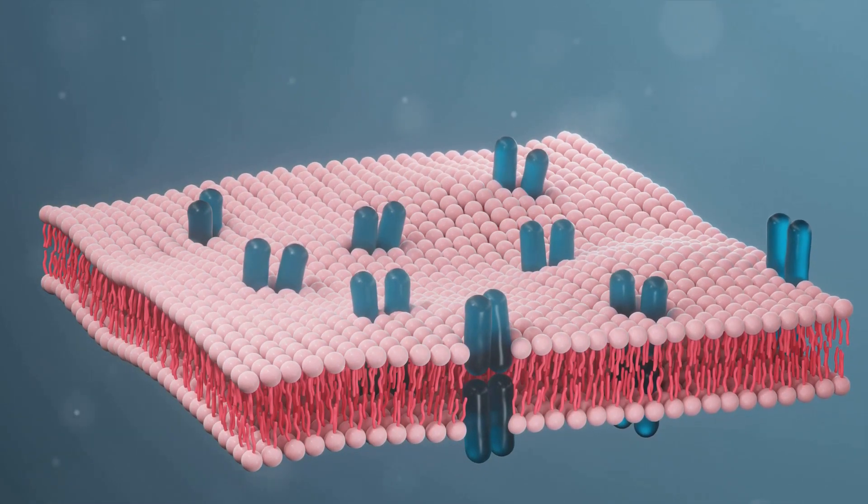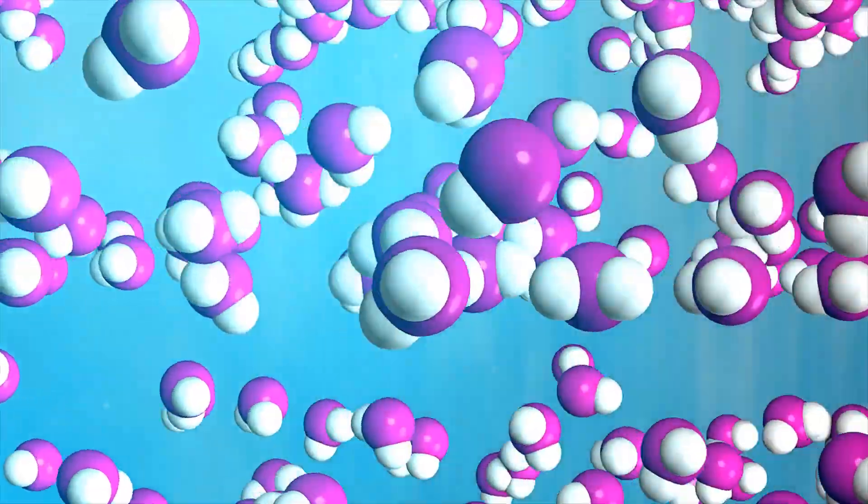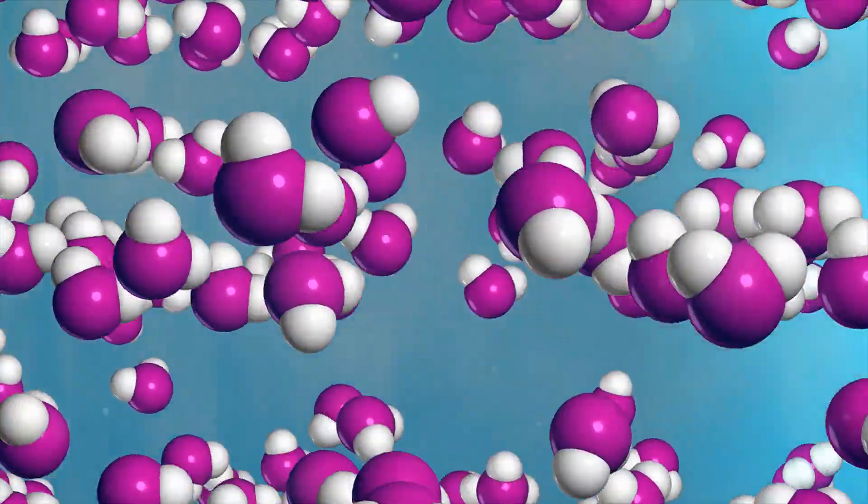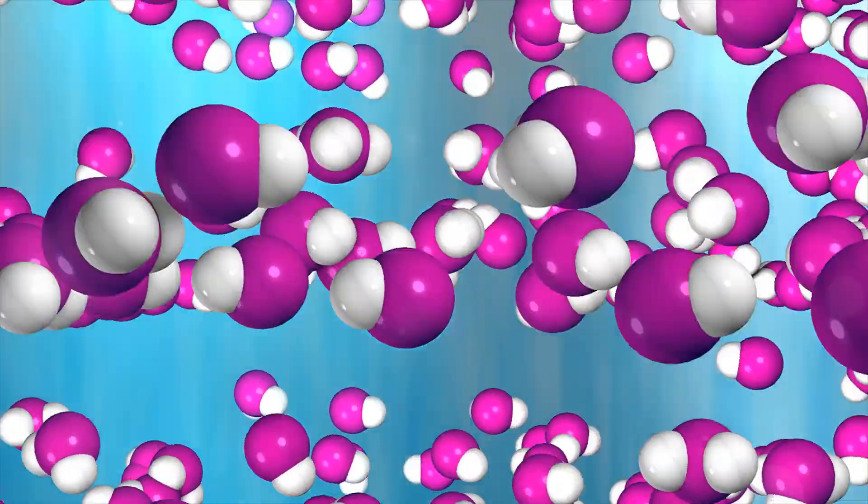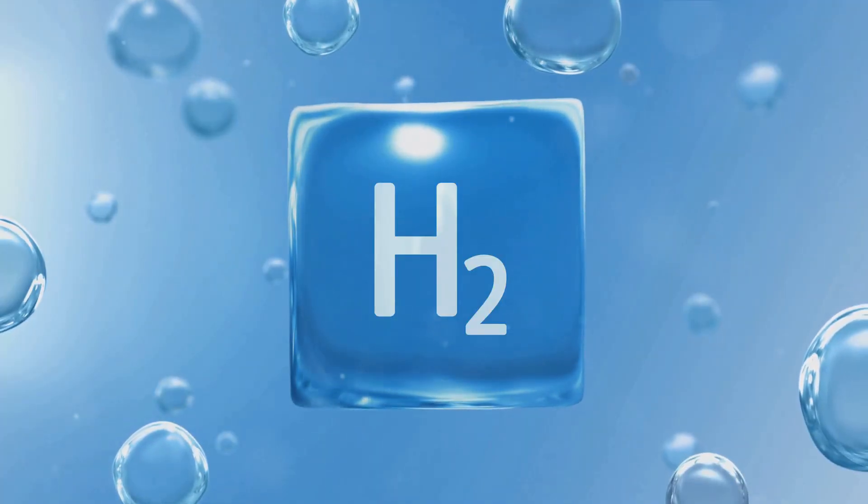But what exactly are they, and how do they work? Each phospholipid molecule is made up of two main parts: a hydrophilic or water-loving head, and a hydrophobic or water-fearing tail. The head consists of a phosphate group attached to a glycerol molecule, while the tail is made up of two fatty acid chains.